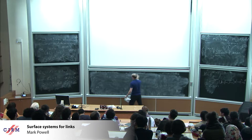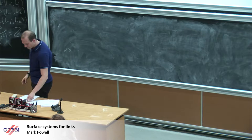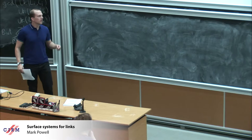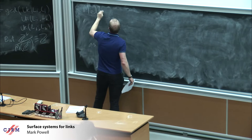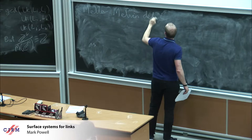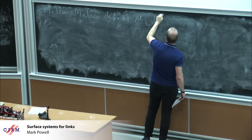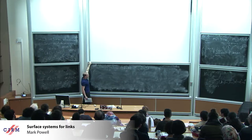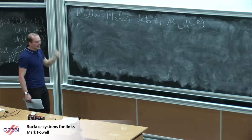I've been talking about triple linking numbers, so now I want to give a definition. Rather than talking about the classical definition of Milnor's invariants, my favorite definition is a geometric way of calculating them, due to Mellor and Melvin. It's something you can really do from a diagram without too much work. And it uses surface systems, which is quite good for proving our theorem.